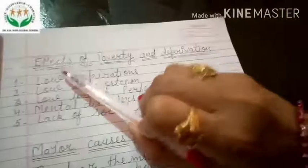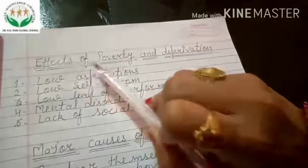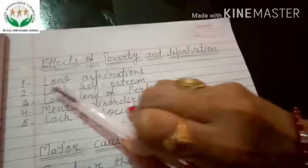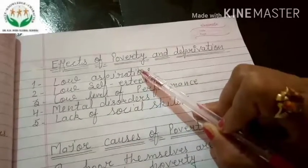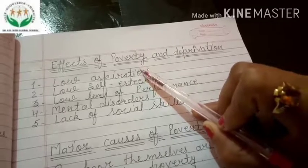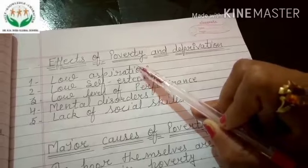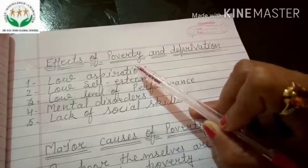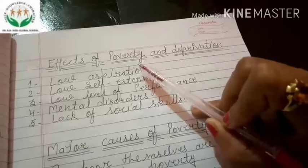Now we will discuss the effects of poverty and deprivation. The first is low aspirations. In terms of motivation, the poor have low aspirations and low achievement motivation, and a high need for dependence. The poor explain their success in terms of luck rather than ability or hard work.